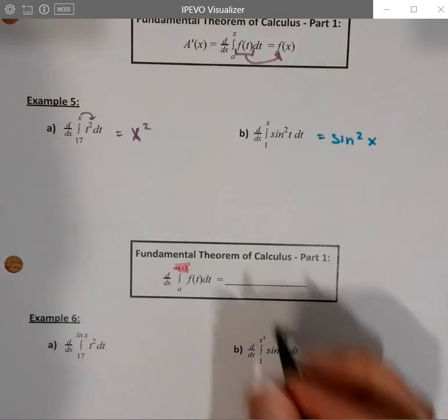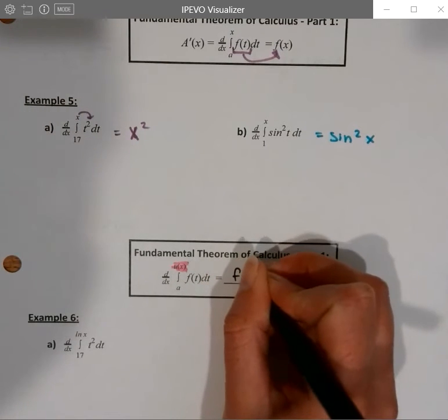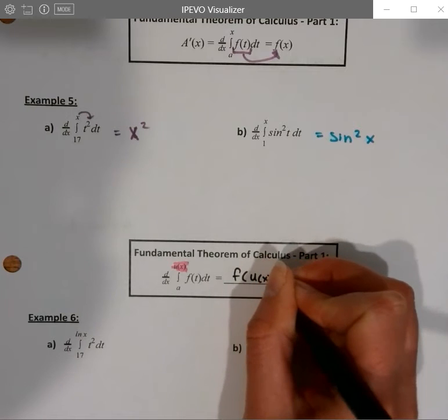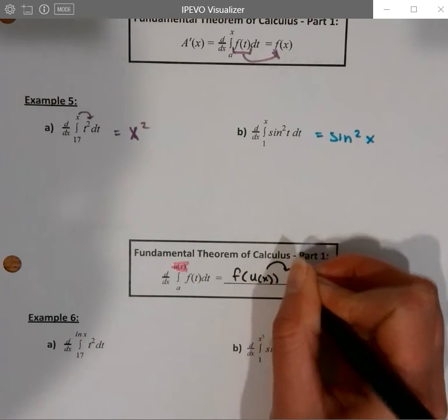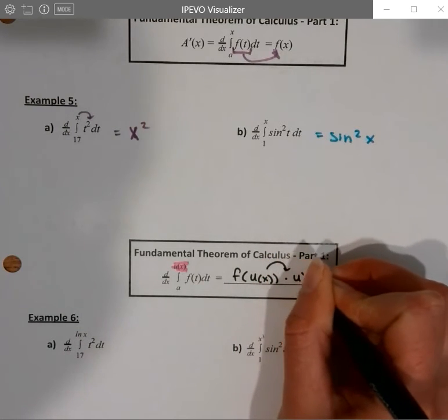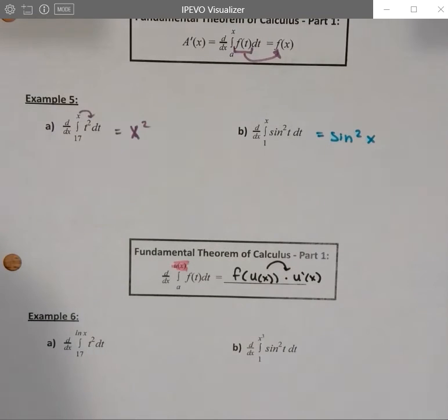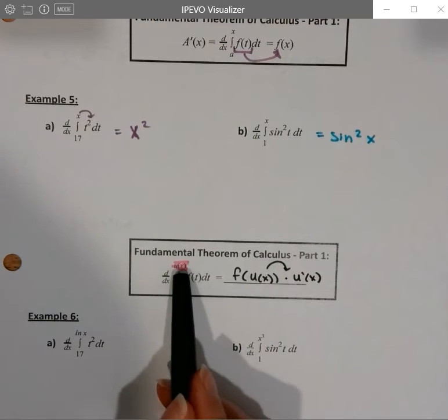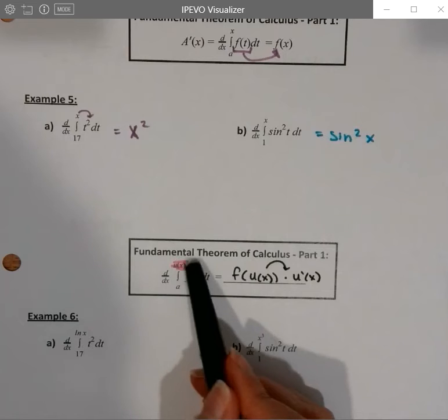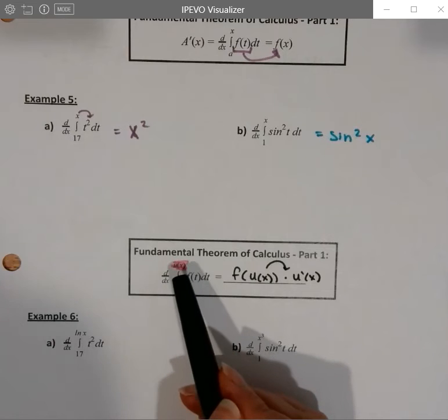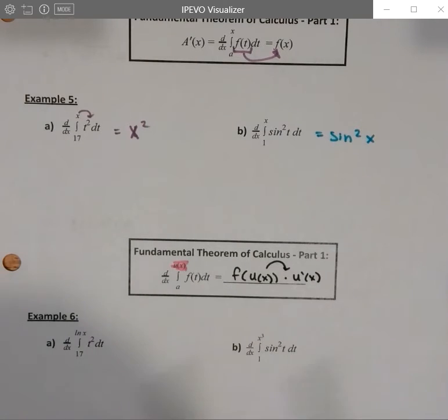So what we're going to get here is f of u of x, but the derivative needs to be multiplied by u prime of x. Okay, because we need a chain rule for the differentiation part. So we would just plug this in if it was x, but since it's not just x, the derivative is going to have that chain rule piece.